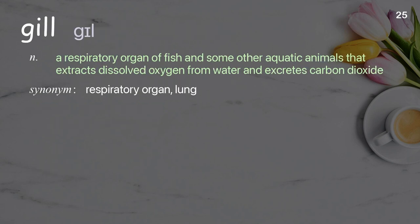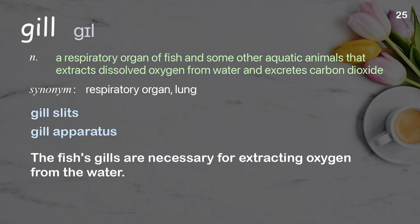Gill: A respiratory organ of fish and some other aquatic animals that extracts dissolved oxygen from water and excretes carbon dioxide. Examples: Gill slits, gill apparatus. The fish's gills are necessary for extracting oxygen from the water.